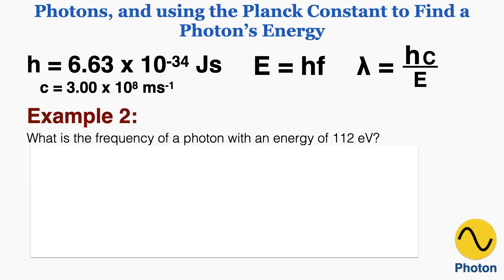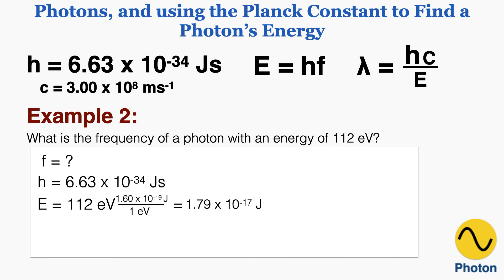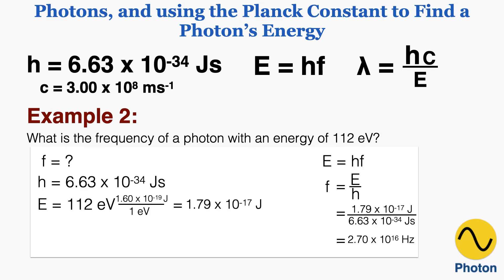Example 2: What is the frequency of a photon with an energy of 112 electron volts? We're looking for frequency. We know the Planck constant and the energy is 112 electron volts. Converting to joules gives 1.79 times 10 to the negative 17th joules. Using E equals h times f and isolating frequency gives f equals E over h. Plugging in, the units work out to 1 over seconds, which equals Hertz, giving a frequency of 2.70 times 10 to the 16th Hertz. If you're given the energy, you can always calculate the frequency of the photon.